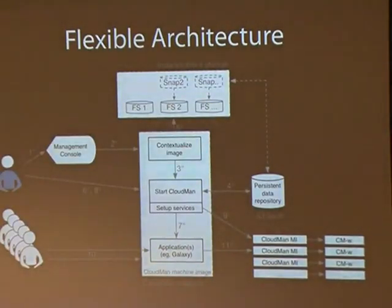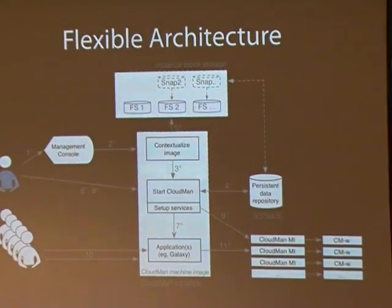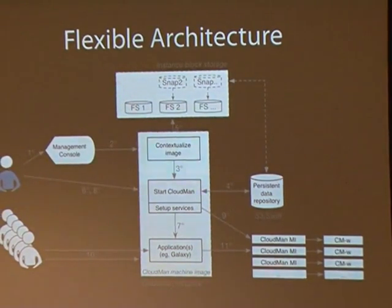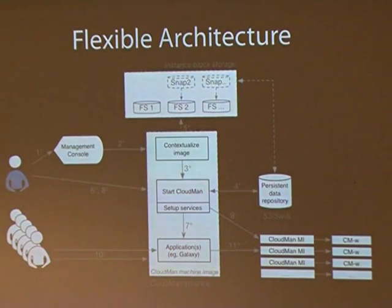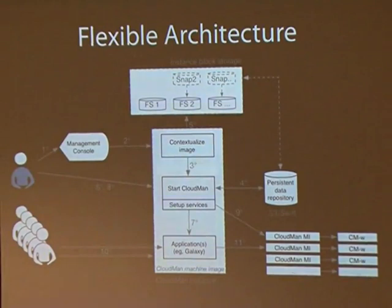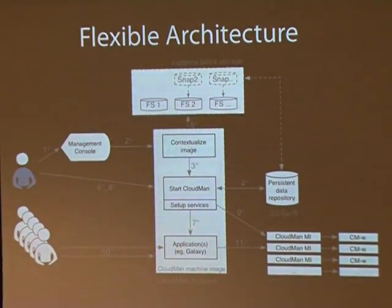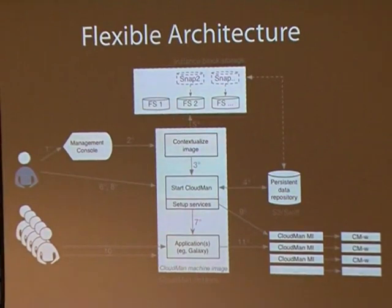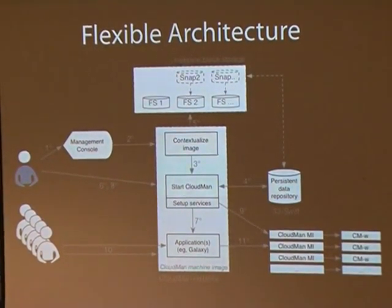On the architecture side — it's deployable on any Ubuntu-based image. It keeps state in a persistent data repository, whether that be Swift or S3. It creates file systems based on either volumes or snapshots that can be shared or not shared. We're currently adding support for an arbitrary data source as a file system — the first available feature is adding an S3 bucket as a local file system. We'll soon have support for an already existing NFS file system and will eventually move into more distributed file systems, especially given the discussions over the past two days.